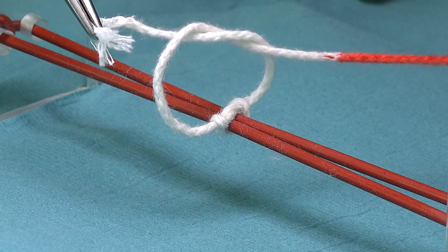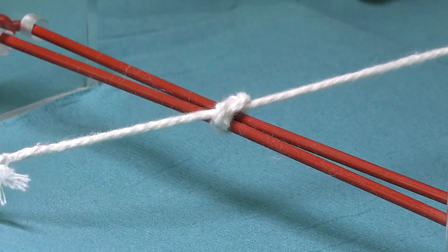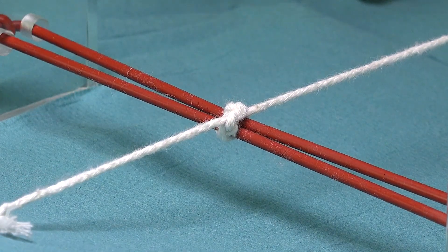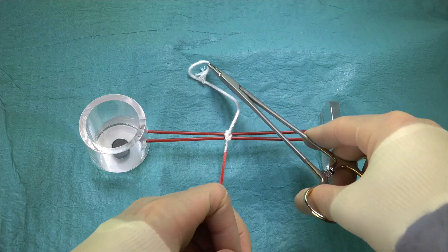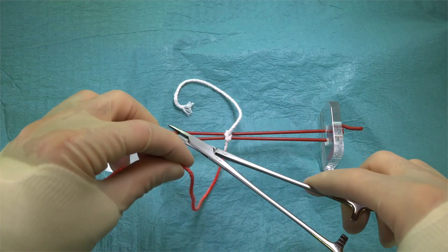We pick up the suture end line closest to us with the instrument, and pull it through the loop, taking it away from us at 180 degrees. This forms the second throw of our instrument surgeon's knot.